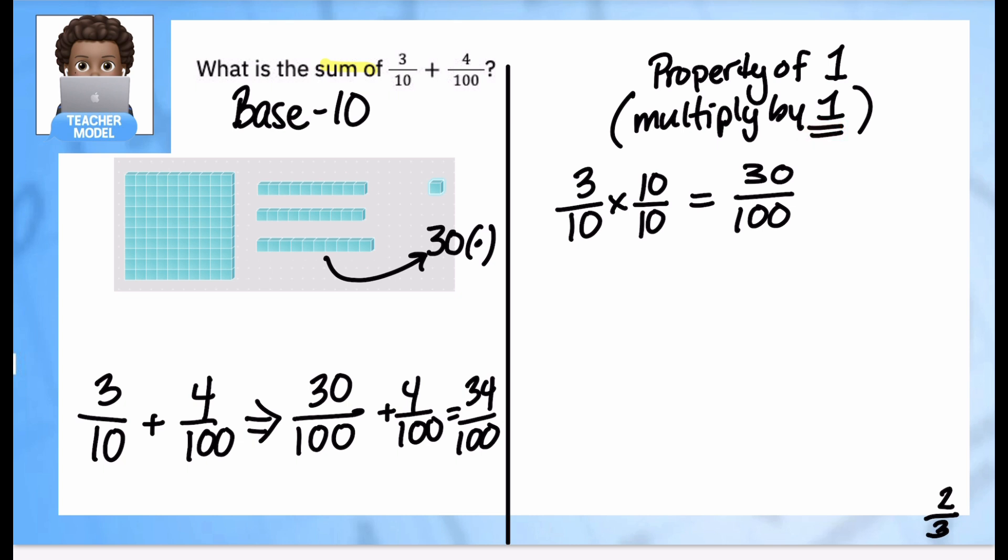Anytime we multiply a number by one, its value stays the same. Now that I've changed three-tenths, I've converted it to 30 over 100. Now I can add these two fractions together and get the same number, 34 out of 100.